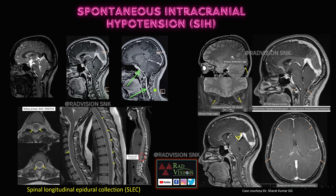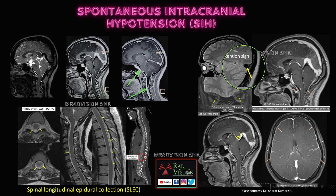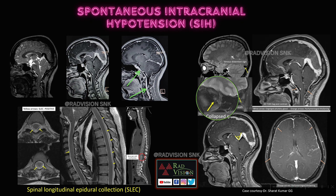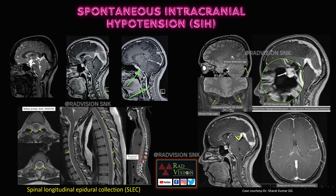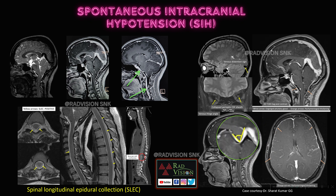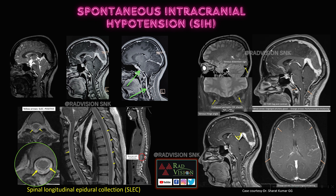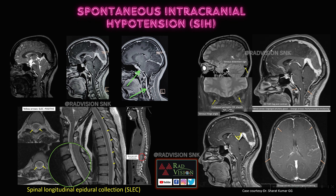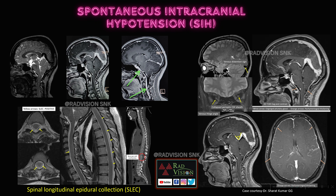Next, this is also a classical case. You can see herniation of the tonsils, venous distension sign — normally the inferior margin of the venous sinus is concave, but here it is convex downwards. There is also collapsed perioptic nerve sheaths, an engorged pituitary gland, pachymeningeal thickening indicated by the orange arrows, an empty venous sinus sign, and a spinal longitudinal epidural collection — a longitudinally extending hyperintense collection in the epidural space. A bony spur is the main culprit in this case.